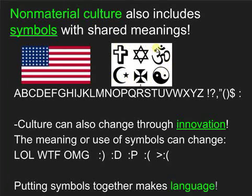We also have symbols of various religious traditions that have shared meaning within that religion, or possibly for people outside of the religion. Letters — A, B, C, D, E, F, G — the alphabet is a bunch of symbols that we can put together to make a language.